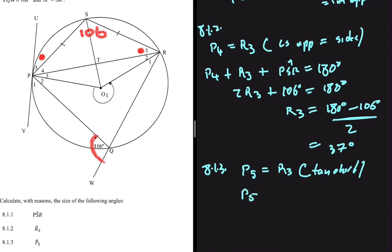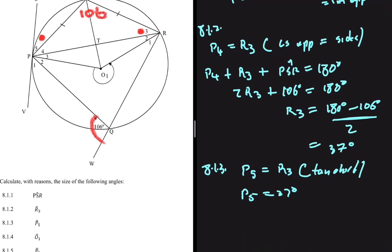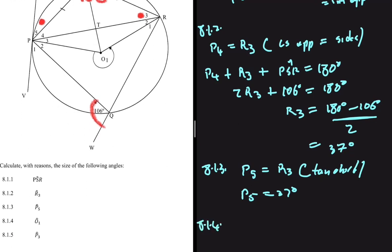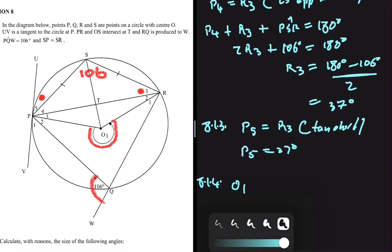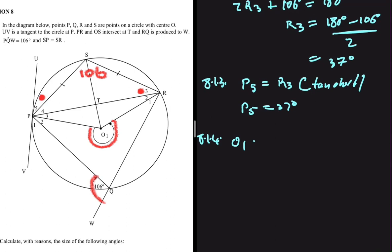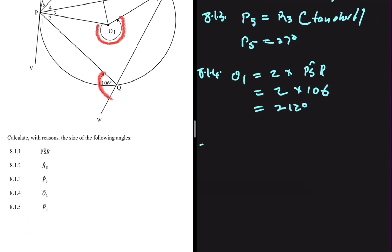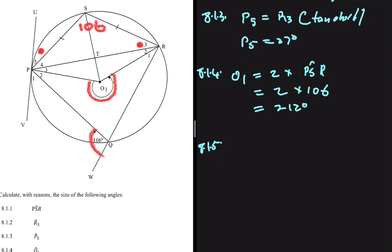So P5 equals R3 by the tan-chord theorem, meaning P5 is 37 degrees. Moving to 8.1.4, we're looking for the size of O1. The angle at the center is twice the angle at the circumference when subtended by the same arc. So O1 equals 2 times PSR, which is 2 × 106 = 212 degrees. Remember to give reasons for all your statements.